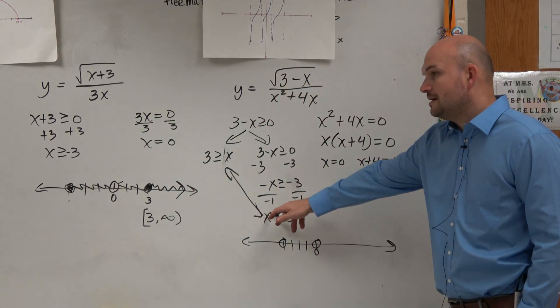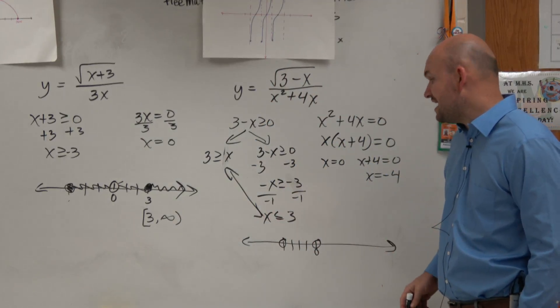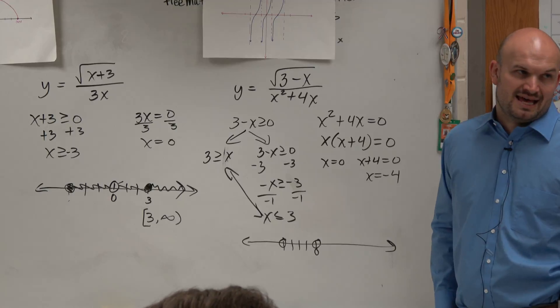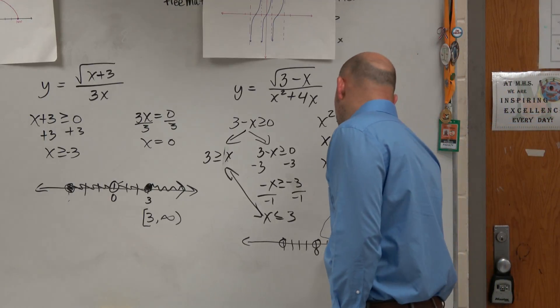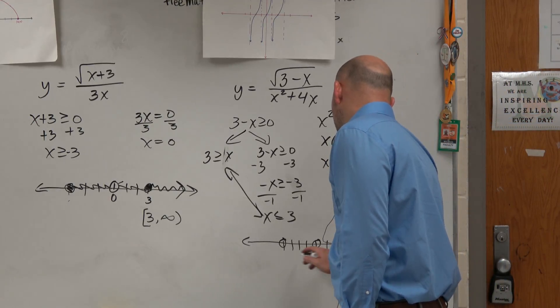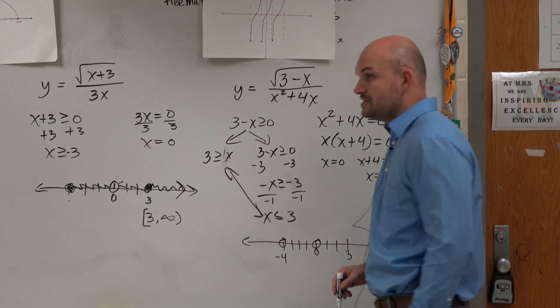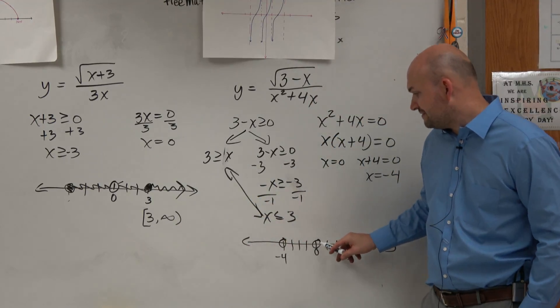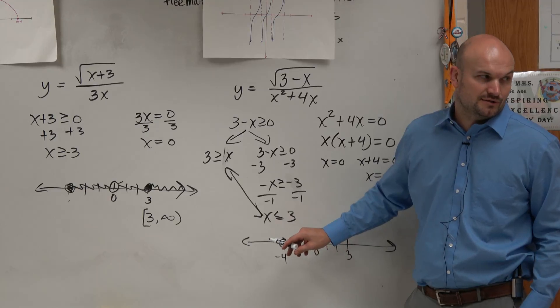And then this says my domain is defined for all values less than 3. So here's 3. So it's all values less than 3. But then we have these two undefined values. So we can't include those.